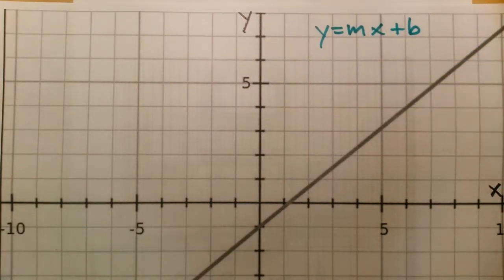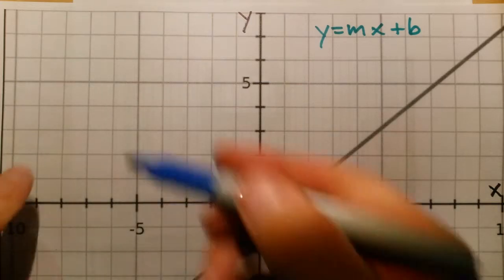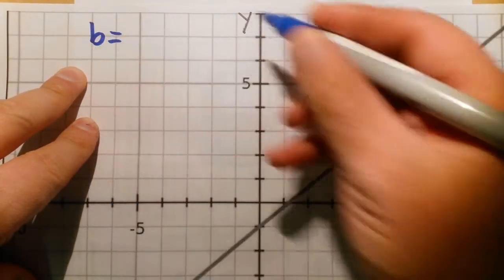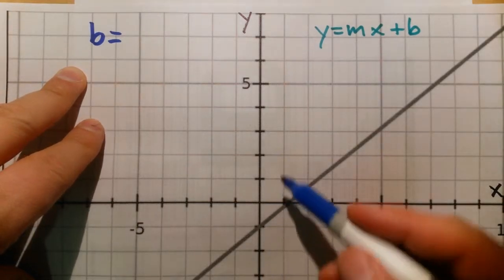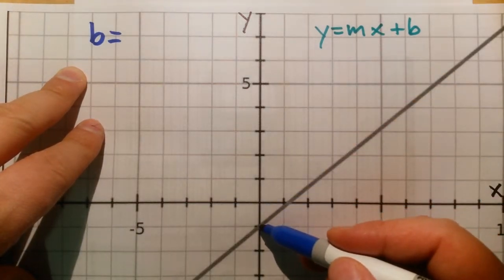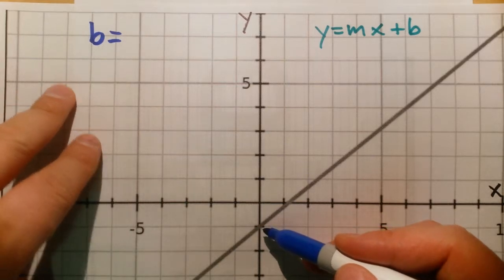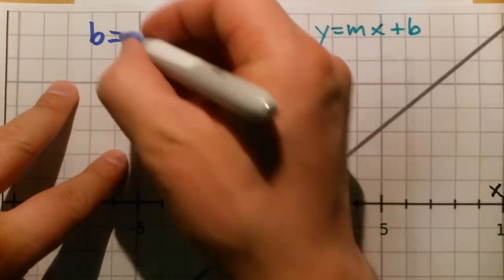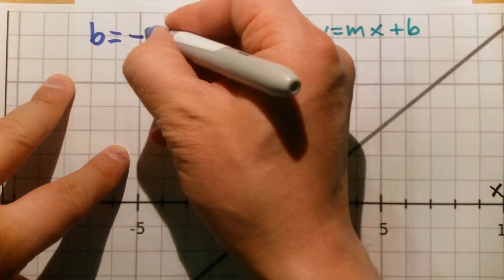So let's start collecting our data. First, by looking at this line, the first thing we can do is collect the y-intercept. Because it's the most obvious one. We know that the y-intercept is the point where the line crosses the y-axis. So it happens to be this one right here, and this point happens to be negative one.